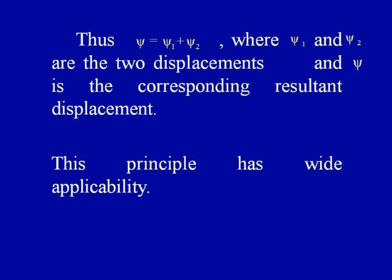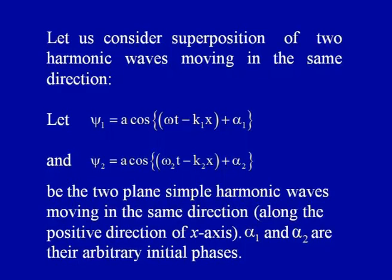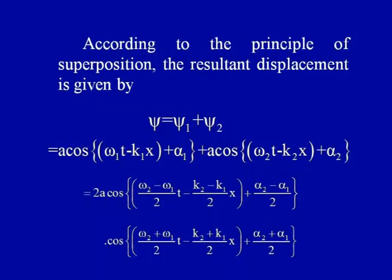Thus ψ will be equal to ψ₁ plus ψ₂, if ψ₁ and ψ₂ are two displacements and ψ is the corresponding resultant displacement. This principle has wide applicability. Let us consider superposition of two harmonic waves moving in the same direction. Let ψ₁ equal to A cos(ω₁t − k₁x + α₁) for the first wave travelling along the positive direction of the x axis, and ψ₂ equal to A cos(ω₂t − k₂x + α₂) for the second one, where α₁ and α₂ are arbitrary initial phases. According to the principle of superposition, the resultant displacement is ψ = ψ₁ + ψ₂.